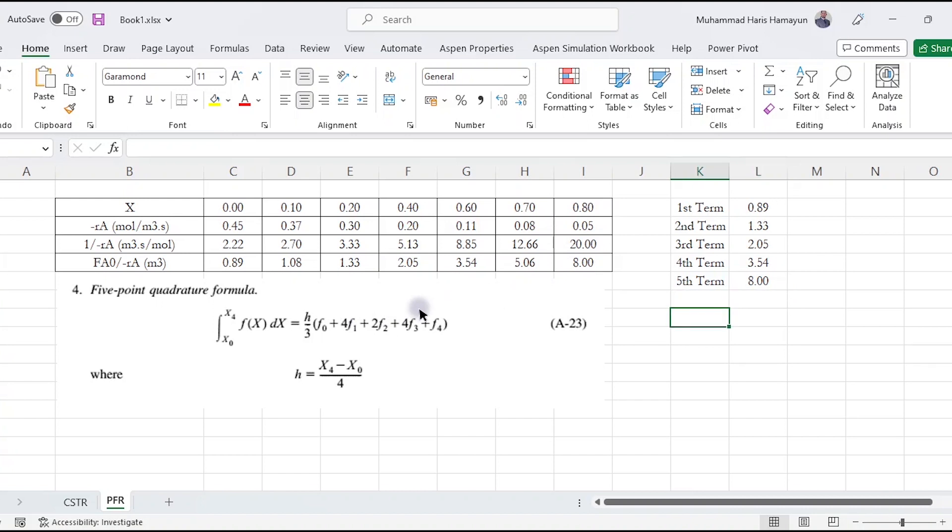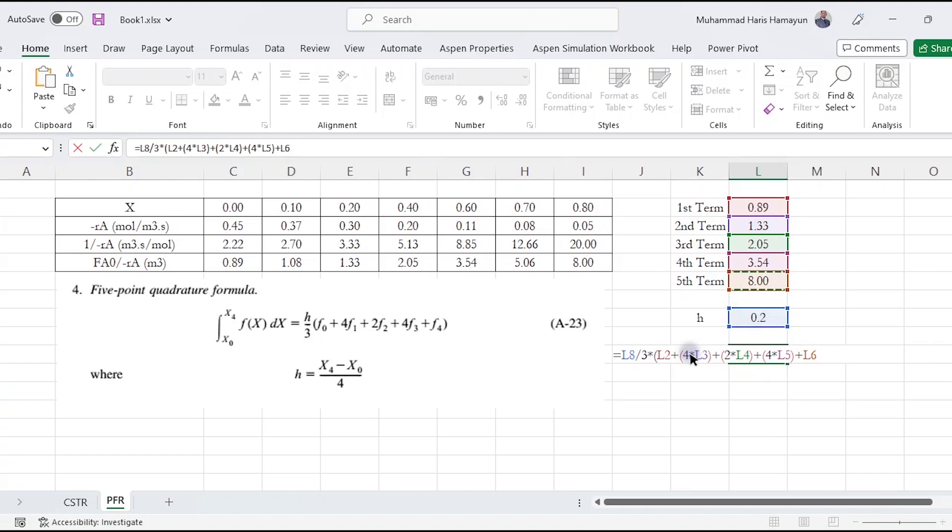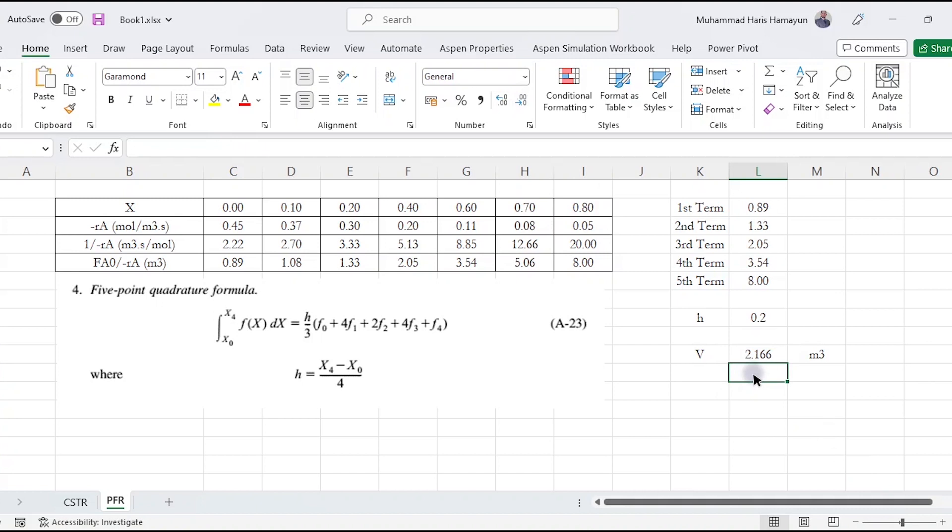What is the value of H? 0.8 minus 0 divided by 4, so H = 0.2. How do we calculate volume? V = 0.2 divided by 3 times (F0 + 4 times F1 + 2 times the third term + 4 times the fourth term + the fifth term). This value comes out to 2.166 or 2.165 cubic meters. Taking it to cubic decimeters by multiplying with 1000, we get 2165.6 or 2166 cubic decimeters volume for PFR.